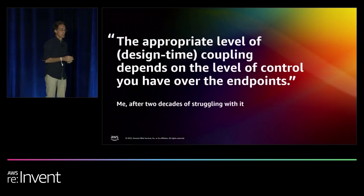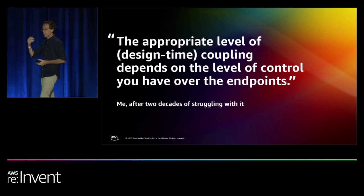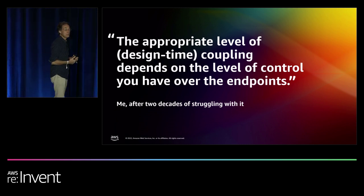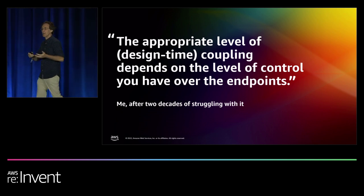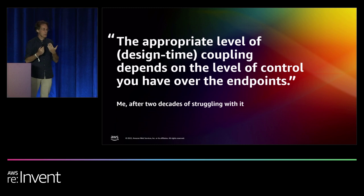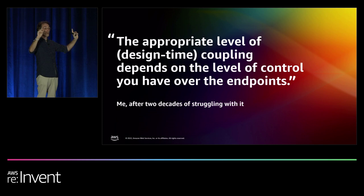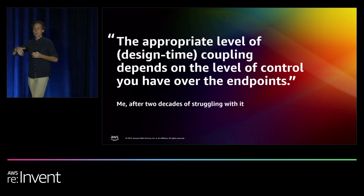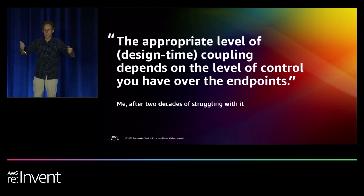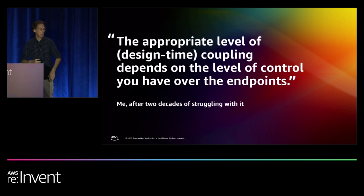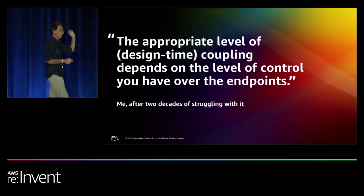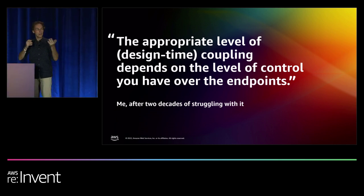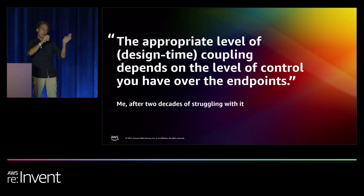By deepening our thoughts around these buzzwords, we come to interesting insights. The amount of coupling you want depends very much on the level of control you have over the endpoints. If you have full control, you can afford more coupling — and that saves design time and runtime overhead. But if you don't have control, then decoupling becomes much more important, because if something changes over here you cannot make a change over there. That is a key part of distributed systems design.